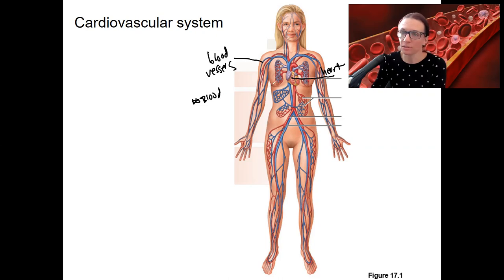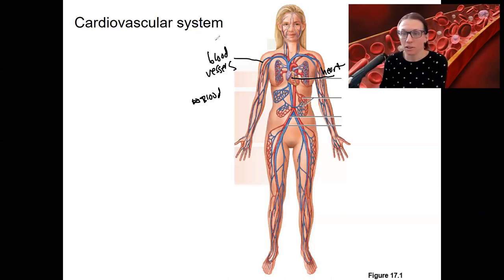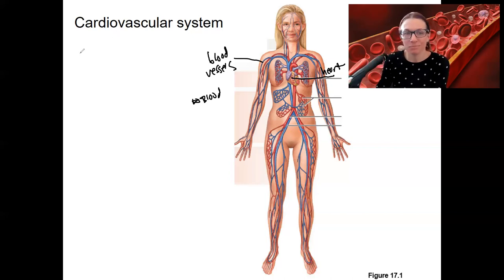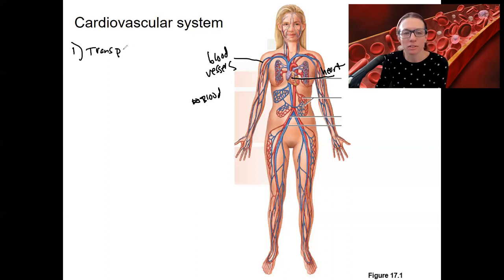Blood is inside the blood vessels and heart. The function of the cardiovascular system is diverse. Some functions are more applicable to blood specifically, but they all actually apply. The most applicable to blood — the main function of blood itself — is transport. So transport includes oxygen,